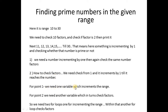We need one variable to increment across the range — 10, 11, 12, 13, 14 — and another variable to find factors of each number. Since both repeat, we need loops. We concluded we need two loops: one for incrementing the range and one for incrementing through the factors.